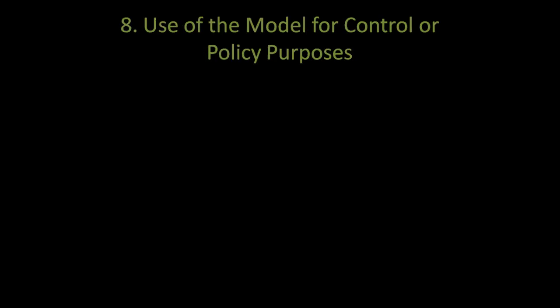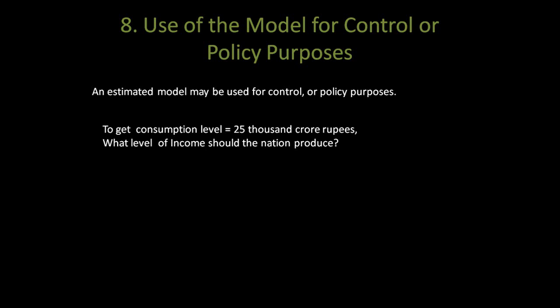The final step involves using the model for control or policy purposes. If the government decides that the optimal consumption level for an economy as a whole should be rupees 25000 crores then it needs to figure out what level of income should the nation produce so as to achieve this desired consumption level.